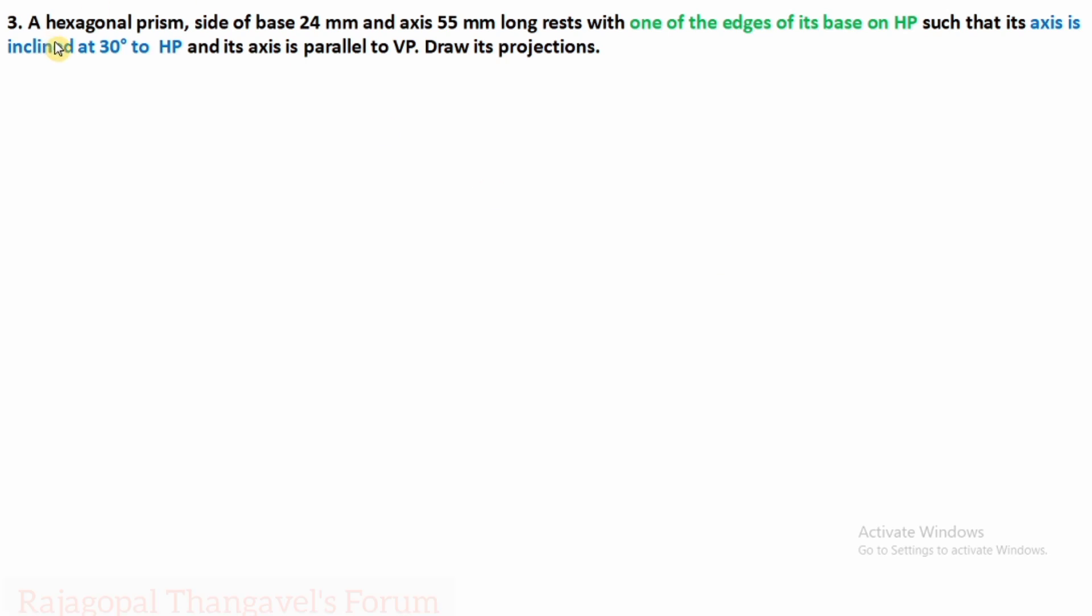Hello friends, welcome back. In this session we will discuss one more hexagonal prism where one of the edges of its base is on HP and the axis is inclined at 30 degrees to HP. In the previous problems, the same edge of the base was on HP but the edge made 30 or 45 degrees to HP, which we discussed.